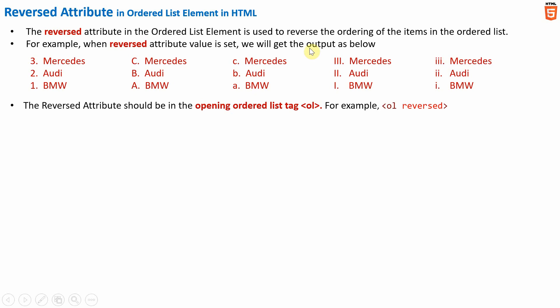Now the reverse attribute should be placed in the opening ordered list tag. For example, here we will have the opening ordered list tag, inside which we have to specify the word reverse.